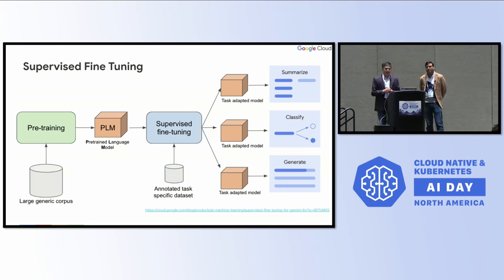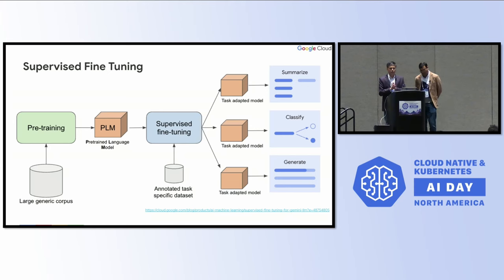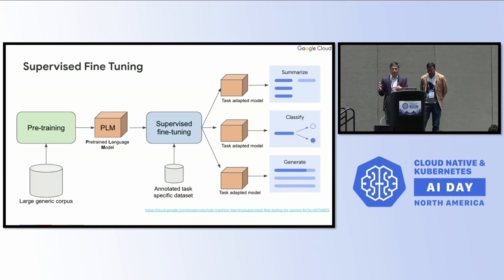PEFT models offer smart ways to freeze the base model and add a LoRA adapter layer on top, which adds extra parameters trained on your data. When you run the model, you avoid the difficulty of running multiple full models. Each LoRA layer can be fine tuned for a specific task — for example, one for summarization, another to classify documents, or another to generate text or images based on your enterprise data.